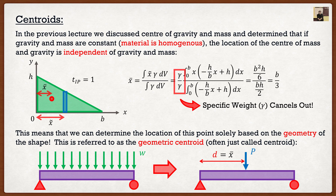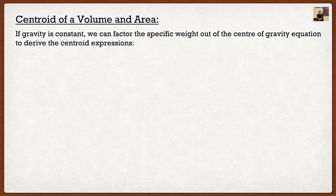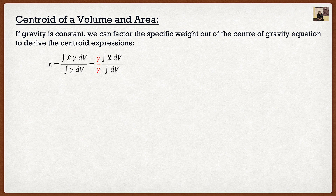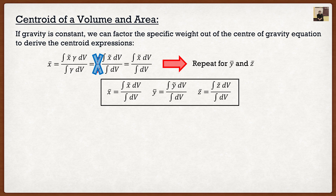I love topics that relate to things we've already done — it makes it easier to visualize. So what are the formulas? We have three different formulas depending on what you're after: the centroid of a volume, of an area, and of a line. The most common is the centroid of an area. If specific weight is constant, we factor it out of the center of gravity equation — gamma over gamma cancels — and we're left with the centroid expressions for x̄, ȳ, and z̄ in terms of volume integrals.